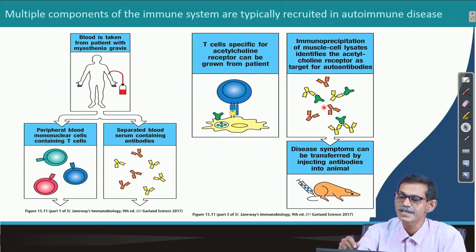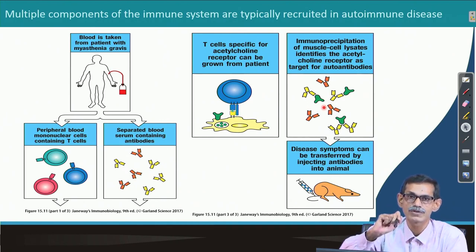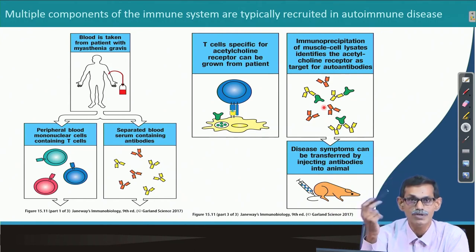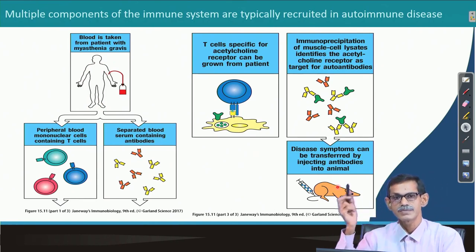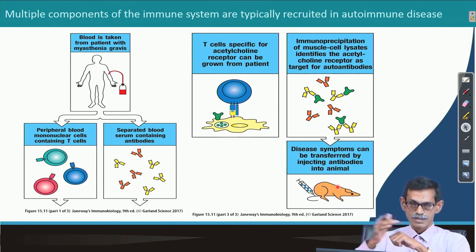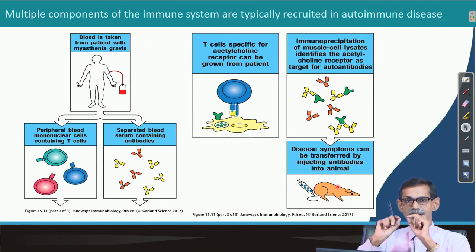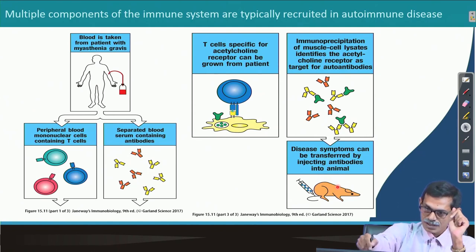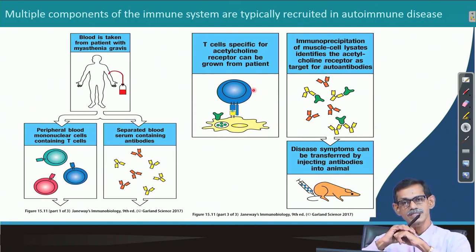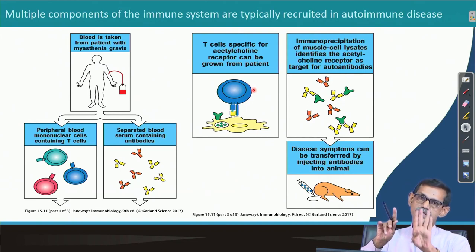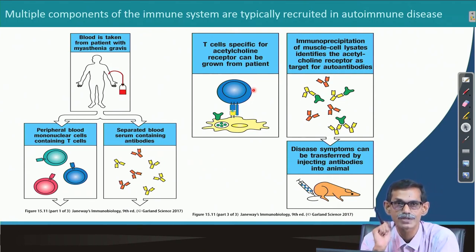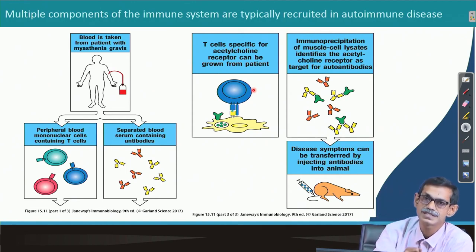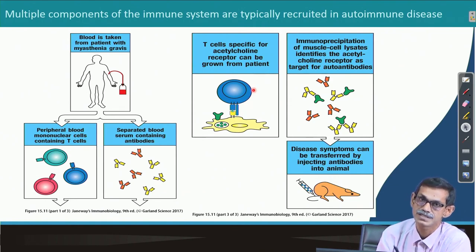Because human and mouse acetylcholine receptors are similar, the same antibody raised against the human receptor can also act on the mouse receptor. It was found that isolating antibody from a myasthenia gravis patient and injecting it into a mouse causes that mouse to show symptoms of myasthenia gravis. This proves that both T cells and B cells are responsible—this is true for many autoimmune diseases. Multiple components of the immune system are typically involved.